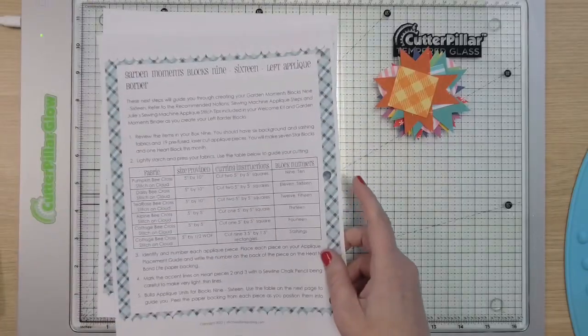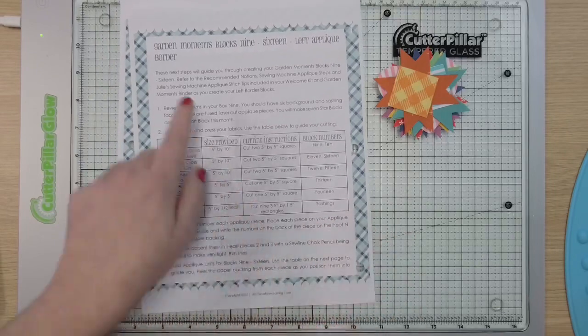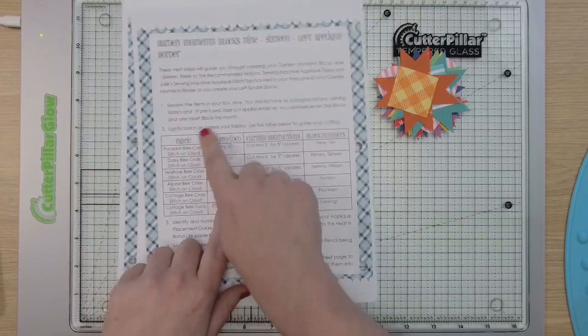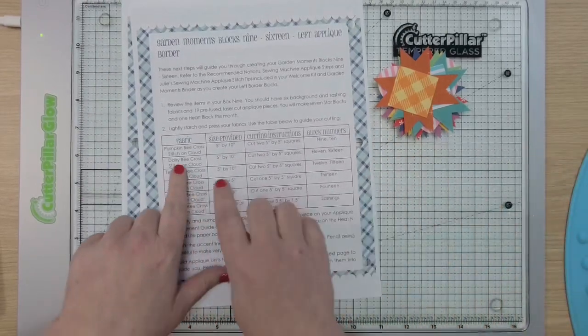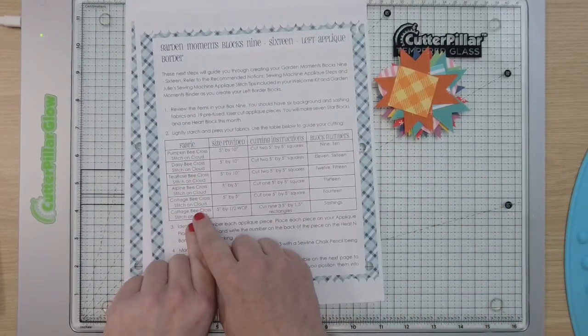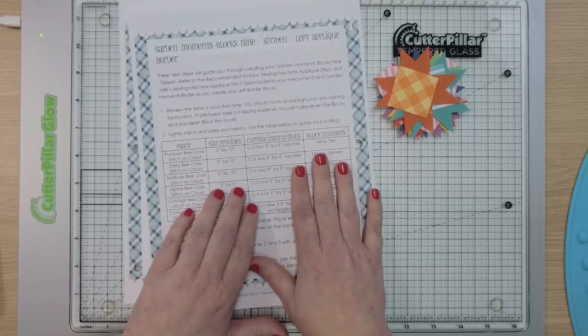First off you have a bunch of fabrics in your kit this month. Let's talk about all of those. You're going to need to do a little bit of cutting. Starch them just like you always do, lightly starch them. Give them a nice little press because they've been folded and shipped. I'm just going to tell you what these fabrics look like and obviously the cutting is super simple.